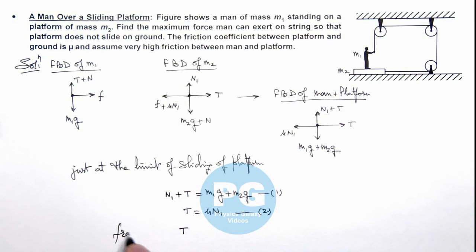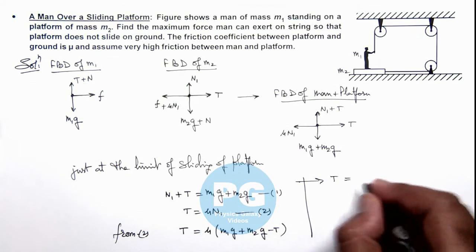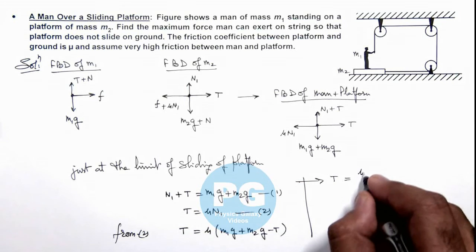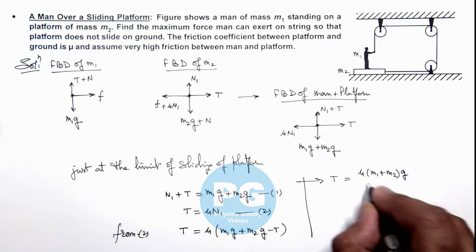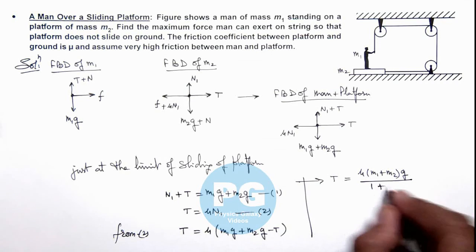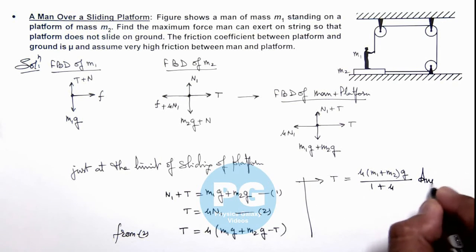From equation 2, we have T = μ(m1g + m2g - T). If we continue, the value of tension we are getting is T = μ(m1 + m2)g / (1 + μ). That will be the final result of this problem.